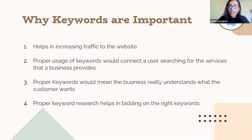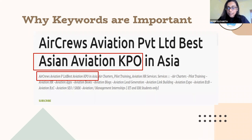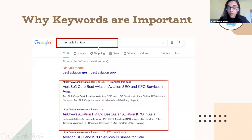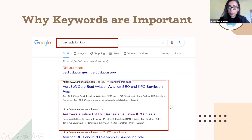It also means the business understands what the customer wants, and you need to do proper keyword research to get the right keywords. As an example, this is the webpage of Anchor's Aviation Private Limited. We have used the keyword 'Best Asian Aviation KPO' or 'Best Aviation KPO in Asia.' If you type 'Best Aviation KPO' into Google, this automatically shows up because it is a long tail keyword directly mapped to Airtuse Aviation, routing customers looking for the best aviation capability directly to this website. Another example is 'Afterglow Wireless Headset BSO,' which is very specific and maps directly to the Amazon listing where this product is available.